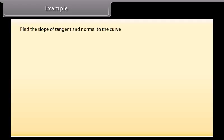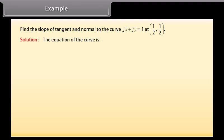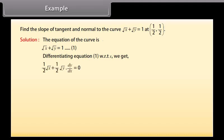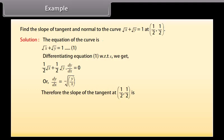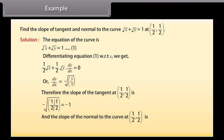Example: Find the slope of the tangent and normal to the curve square root x plus square root y equals 1 at (1/2, 1/2). Solution: Differentiating with respect to x gives 1 by 2 root x plus 1 by 2 root y into dy by dx equals 0, so dy by dx equals minus square root of y by x. Therefore the slope of the tangent at (1/2, 1/2) is minus square root of (1/2) upon (1/2), which equals minus 1. The slope of the normal is minus 1 by minus 1, which equals 1.